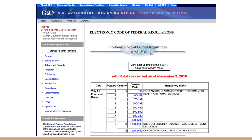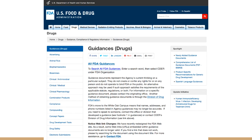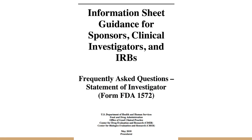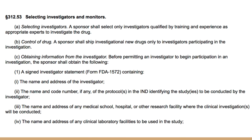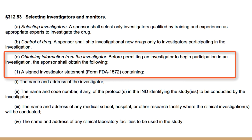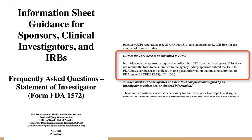Although the CFR provides the regulations, sometimes they are not as clear as we would like them to be. Therefore, the FDA provides guidance documents to provide their current thinking about certain regulations. For example, clinical trials being conducted under an IND require investigators to complete and sign the Statement of Investigator, also known as Form FDA 1572, or 1572 for short. While 21 CFR 312.53 states that the sponsor of the clinical trial needs to collect the 1572, the regulations do not specify if and when the 1572 needs to be submitted to the FDA. This is where the FDA provides a guidance document that helps sponsors understand more about the 1572 form and the FDA's expectations regarding collection and submission.